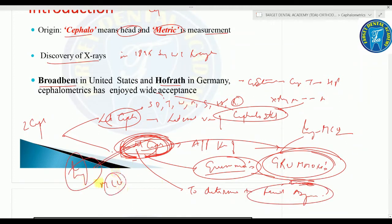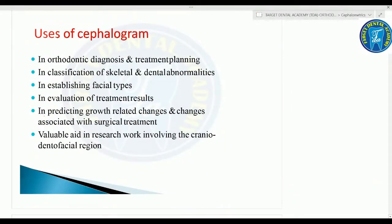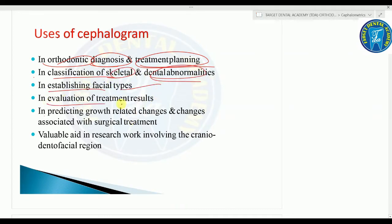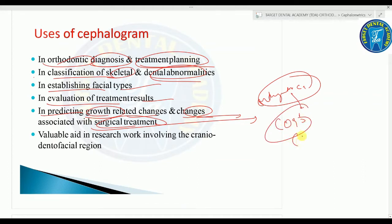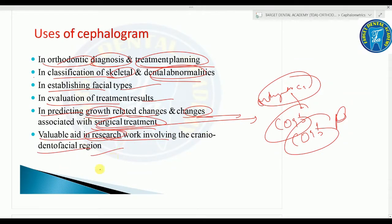The uses of the cephalogram include planning diagnosis and treatment, skeletal classification, dental abnormalities, establishing facial type, evaluating treatment results, predicting growth-related changes, and evaluating changes related to surgical treatment such as orthognathic surgery. For orthognathic surgery, COGS analysis is mainly used. Cephalometrics is also a valuable aid in research involving the dentofacial region.